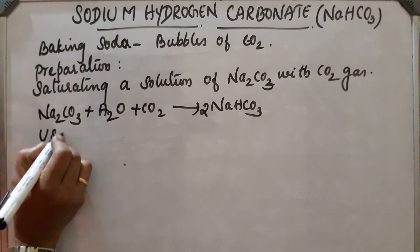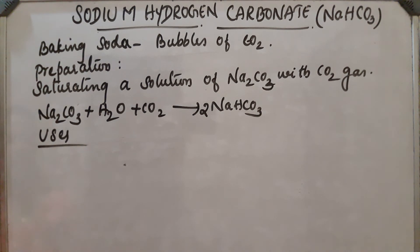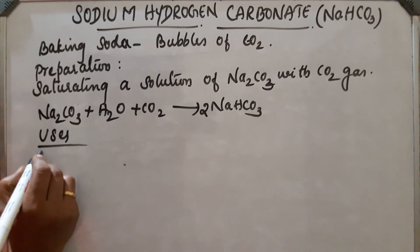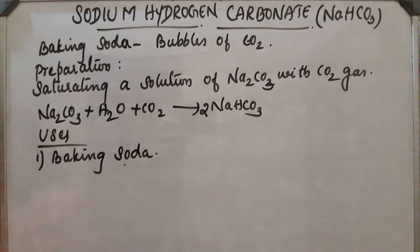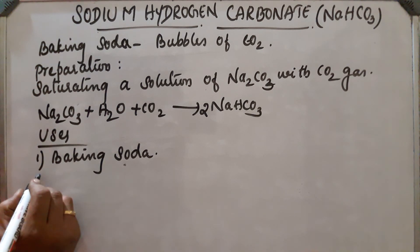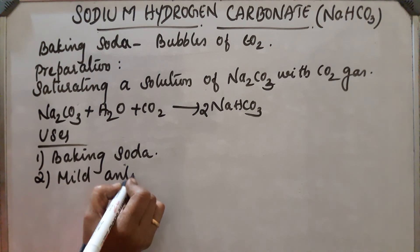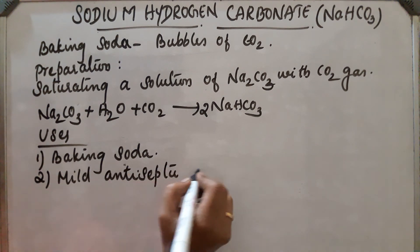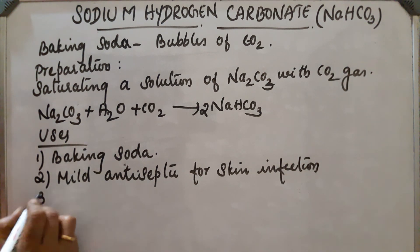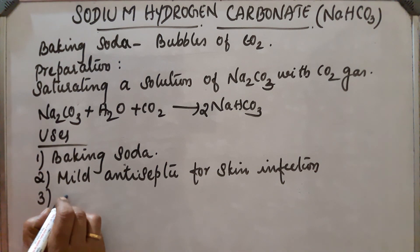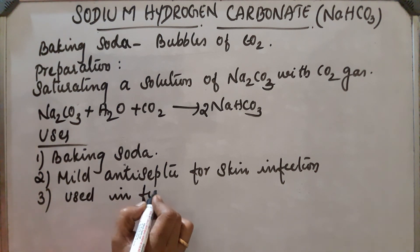Uses of sodium hydrogen carbonate (also called sodium bicarbonate): First, it is used as baking soda because on heating it decomposes and forms bubbles of carbon dioxide, which makes cakes fluffy and light. Second, it is used as a mild antiseptic for skin infections. Third, it is used in fire extinguishers.